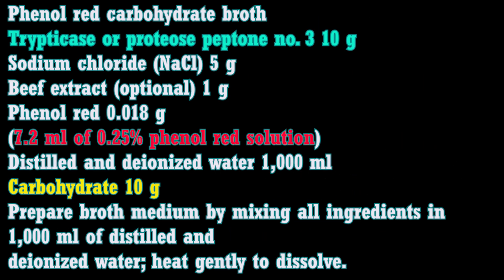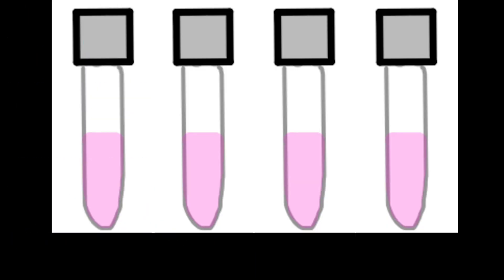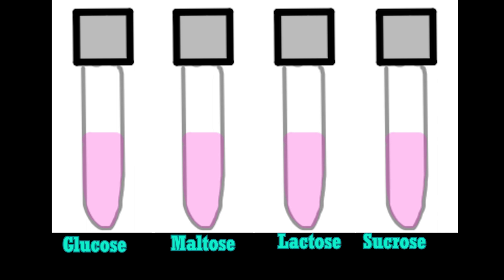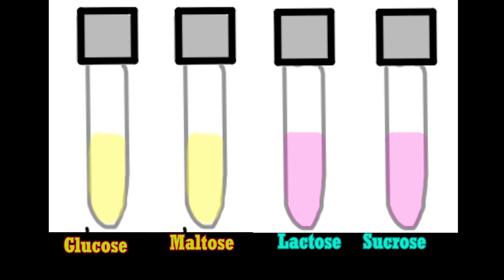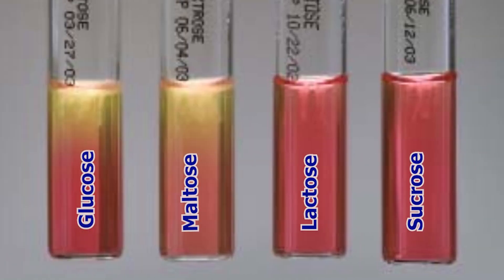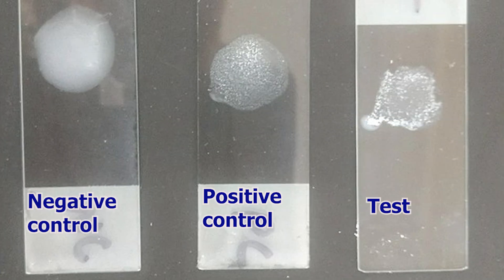Carbohydrate utilization by N. meningitidis: various carbohydrates are added to cysteine trypticase agar base to a final concentration of 1%. To confirm the culture as N. meningitidis, a set of four tubes each containing a sugar — glucose, maltose, lactose, and sucrose — is used. Members of the Neisseria species produce acid from carbohydrates by oxidation, not fermentation. N. meningitidis oxidizes glucose and maltose but not lactose and sucrose. A phenol red indicator changes color to yellow at a pH of 6.8 or less. Serotyping: various serotypes of N. meningitidis are differentiated by slide agglutination test using monovalent antisera.